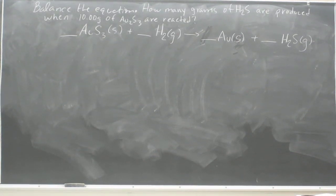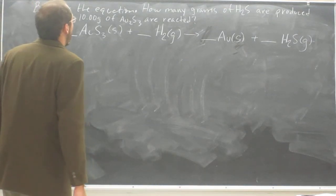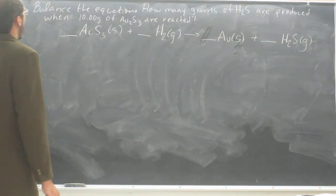Okay, so this one's from the practice test. Balance the equation. How many grams of hydrogen sulfide are produced when 10 grams of gold sulfide are reacted? Okay, so the first thing we need to do is balance this equation.